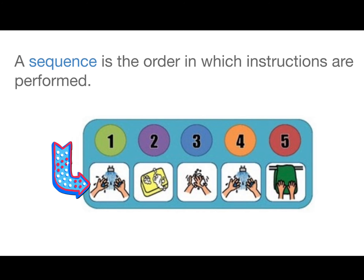Sometimes commands work together. This picture shows the sequence we use when we're washing our hands. Turn the water on and get your hands wet, then use the soap, lather up, then rinse, then dry your hands. A sequence is all of those commands together.